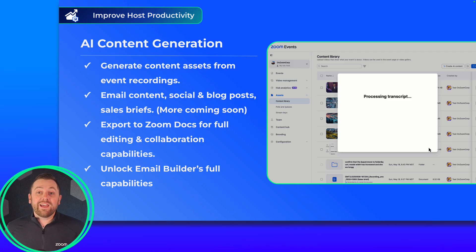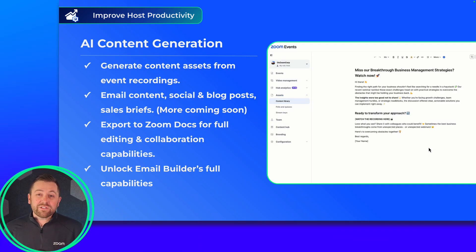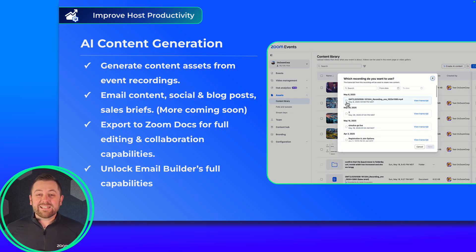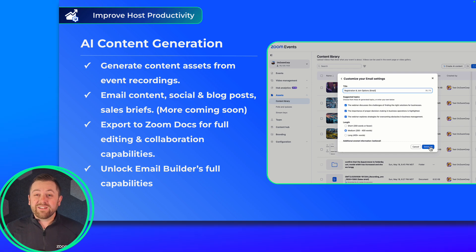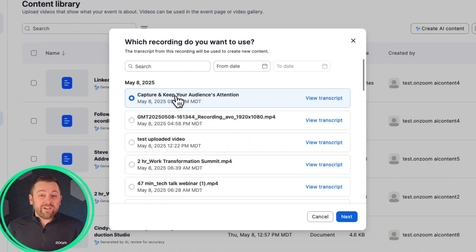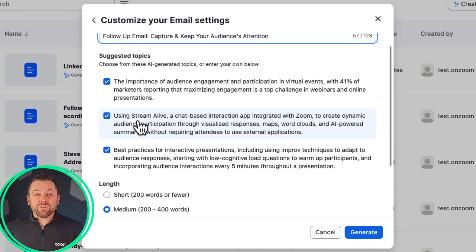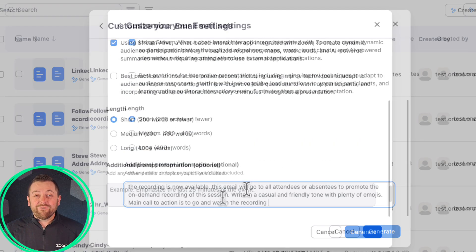It is a new day for Zoom Events. We know that virtual events are so much hard work, but unfortunately for a whole lot of event hosts, the value of our sessions ends with that big red button that ends the session. We want to change this, so we are introducing AI content generation with Zoom Events. You can now target your event and webinar recordings and create email content, social posts, blog posts, and even longer form sales briefs targeted at specific audiences, all without leaving the events platform.